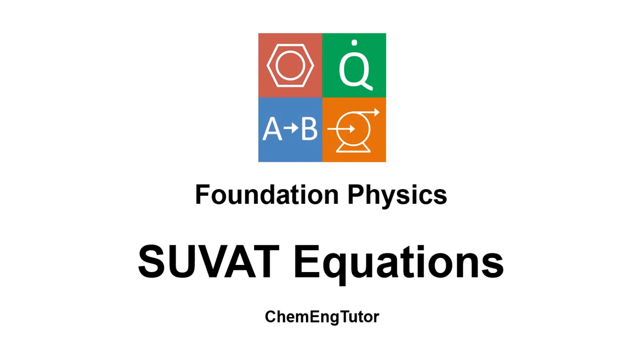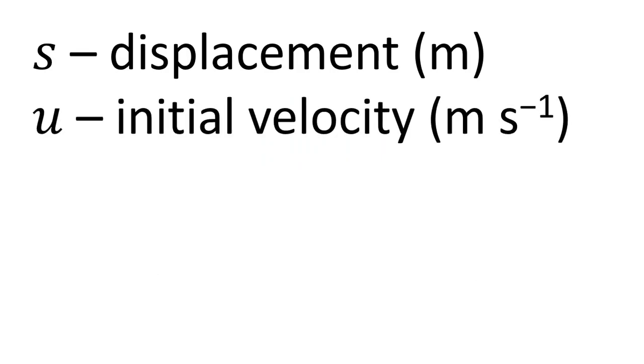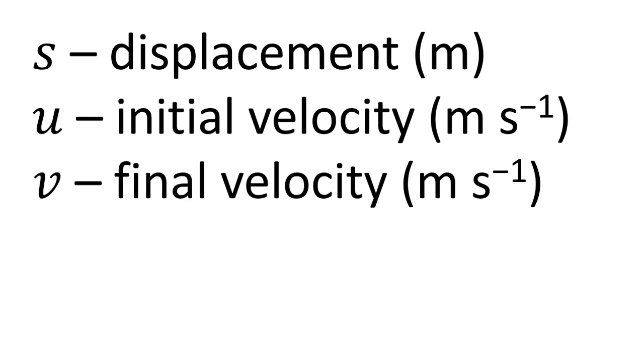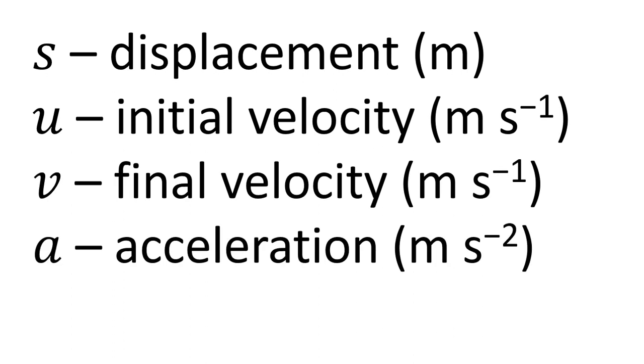In this video I'm going to talk to you about the SUVAT equations. These are a set of equations that relate some different quantities: S for displacement, U for initial velocity, V for final velocity, A for acceleration, and T for time. The symbols for each of these quantities spell out SUVAT, so that's where they get their name from.